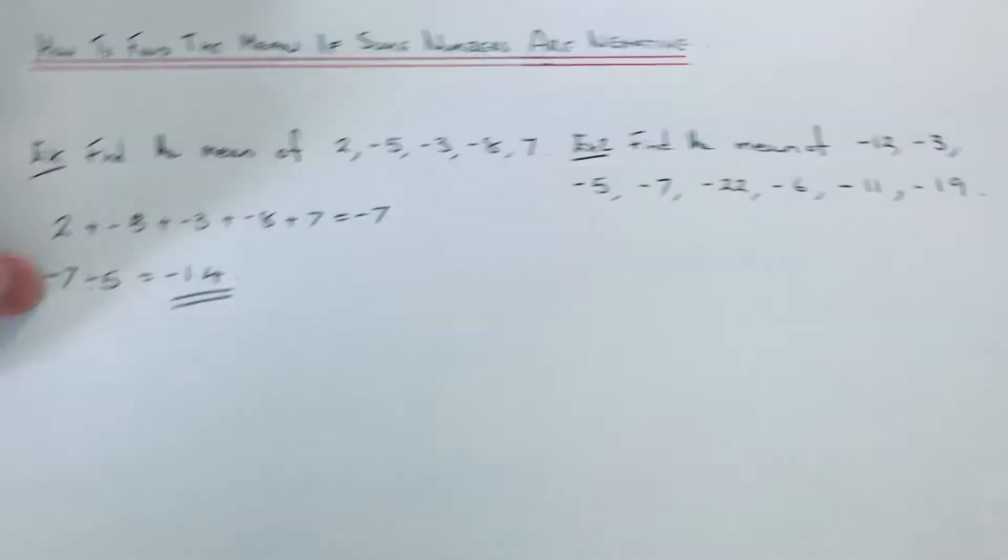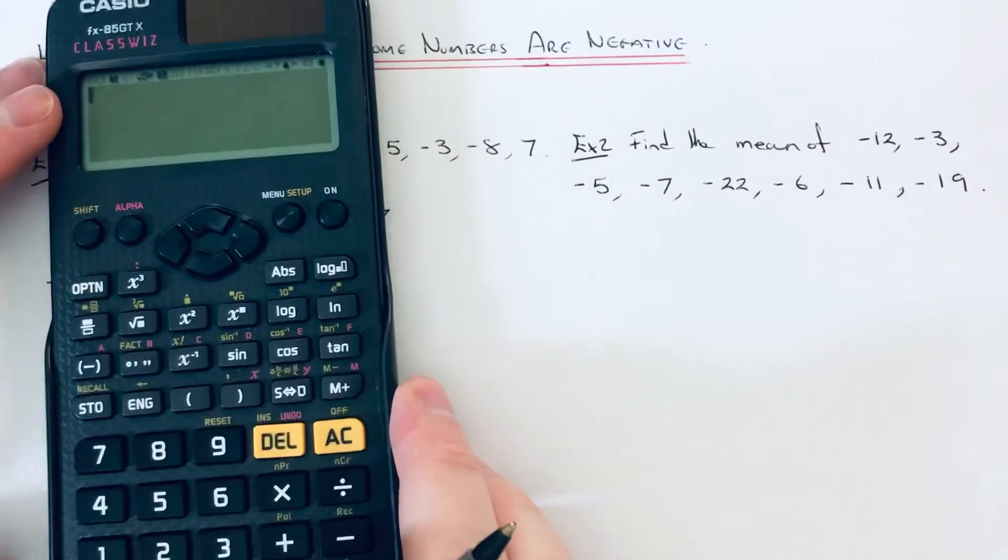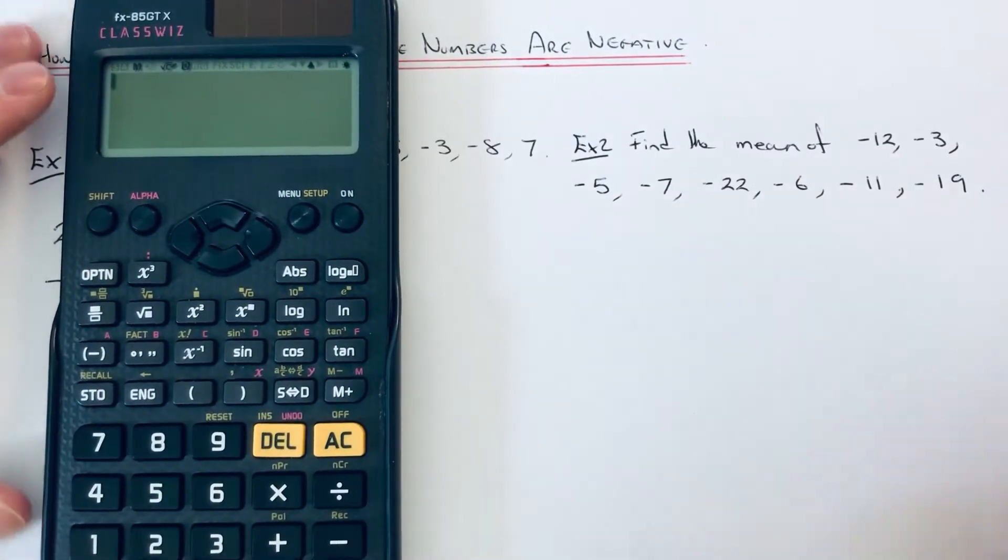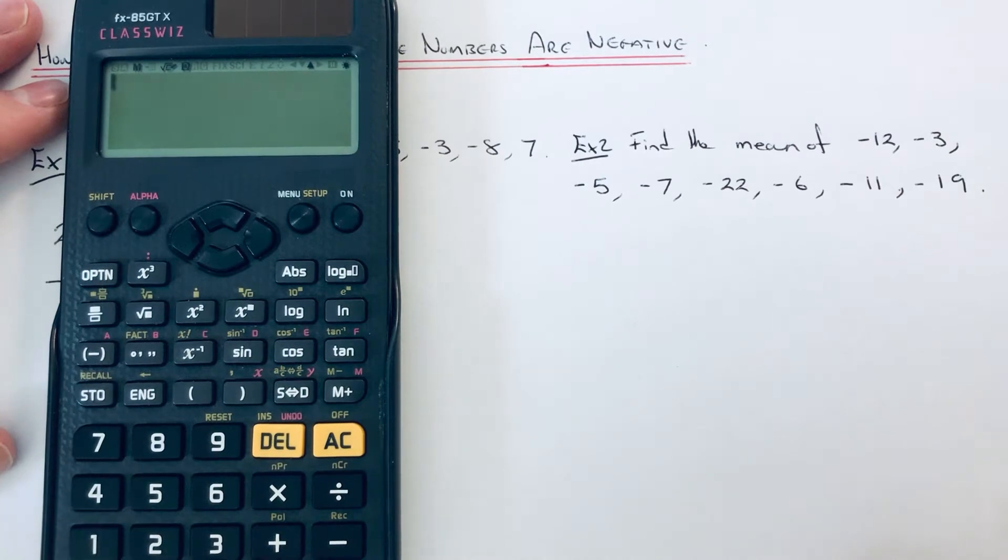Let's have a look at our second example then. This time we've got to find the mean of minus 12, minus 3, minus 5, minus 7, minus 22, minus 6, minus 11, and minus 19.